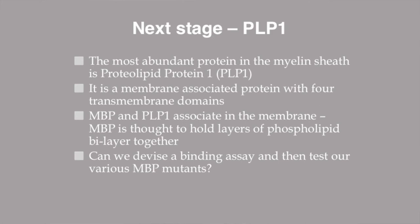Another protein found within the myelin sheath, proteolipid protein 1 or PLP1 — the most abundant protein in the myelin sheath — interacts with MBP within the myelin sheath. The next step is to look at PLP1 and develop a binding assay to test different chemicals to see if we can strengthen this interaction between the two proteins. By strengthening this interaction, we lower the chance of demyelination occurring and therefore the likelihood of multiple sclerosis being diagnosed. Thank you for listening.